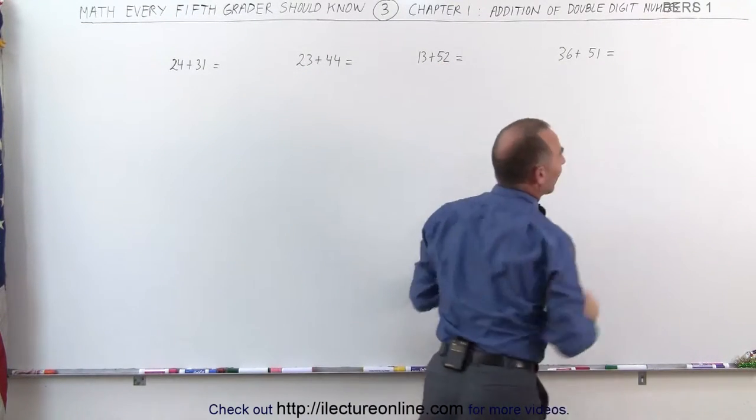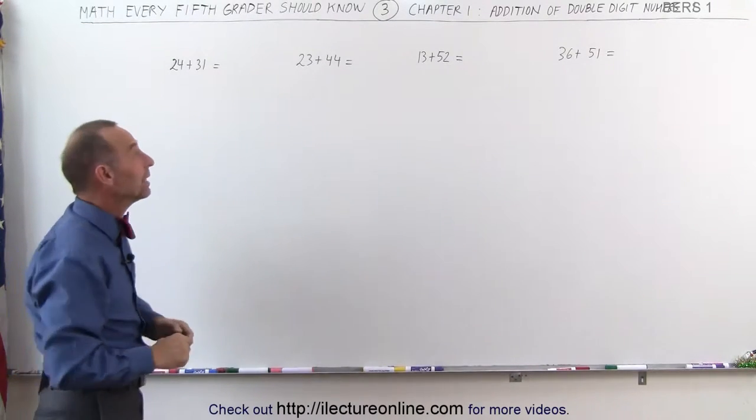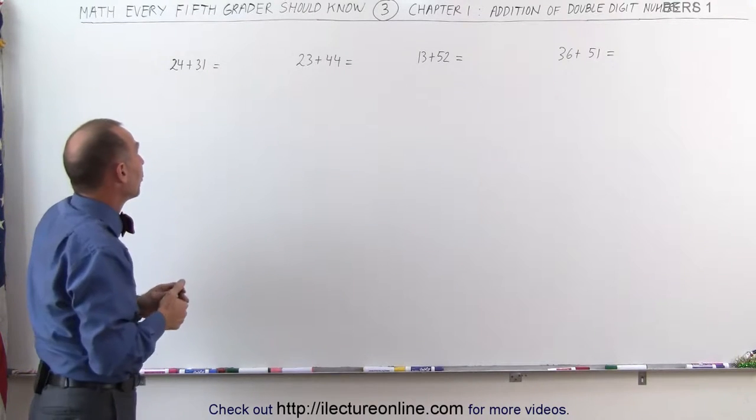3 plus 5, and 6 plus 1. Every time you get a number less than 10, that would be the first type of double-digit numbers we need to add. When that's the case, that makes it very straightforward.